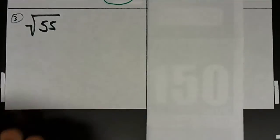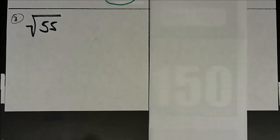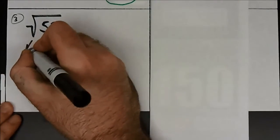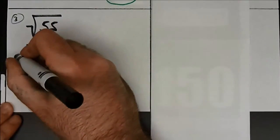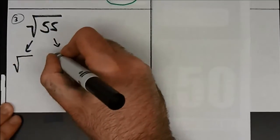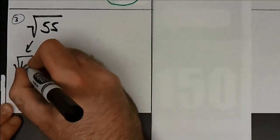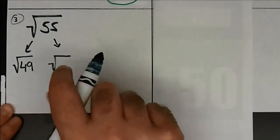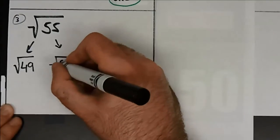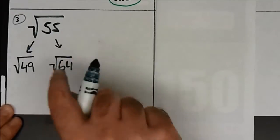Let's take a look at number 3. Is 55 a perfect square? No, that means this is not going to come out evenly, so we have to estimate. Let's find the two perfect squares closest to 55. The smallest one is 49, right below 55 — that's 7 times 7. And the one right above it is 64, which is 8 times 8.